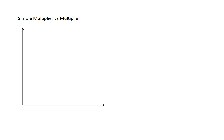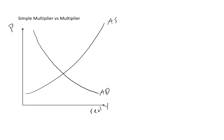In this video we're going to look at the difference between the simple multiplier and the multiplier. Let's start off by drawing our equilibrium in our AS-AD model. We have the price level on the y-axis, real output or real national income — real GDP — on the x-axis. Then we have our downward sloping aggregate demand curve, our upward sloping AS curve, and we have some short-run equilibrium.